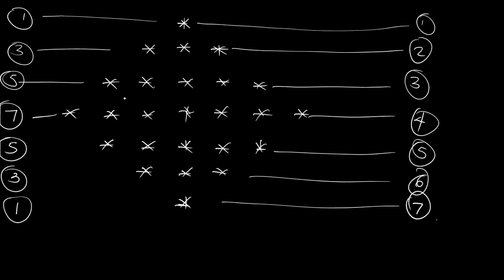Since the diamond starts with 1 and the difference between each row is 2, it only works with odd numbers. If you want to increase the height to 9, the middle row will have 9 stars. If you make it 5, the middle will be 5 stars and there will be 5 rows total.